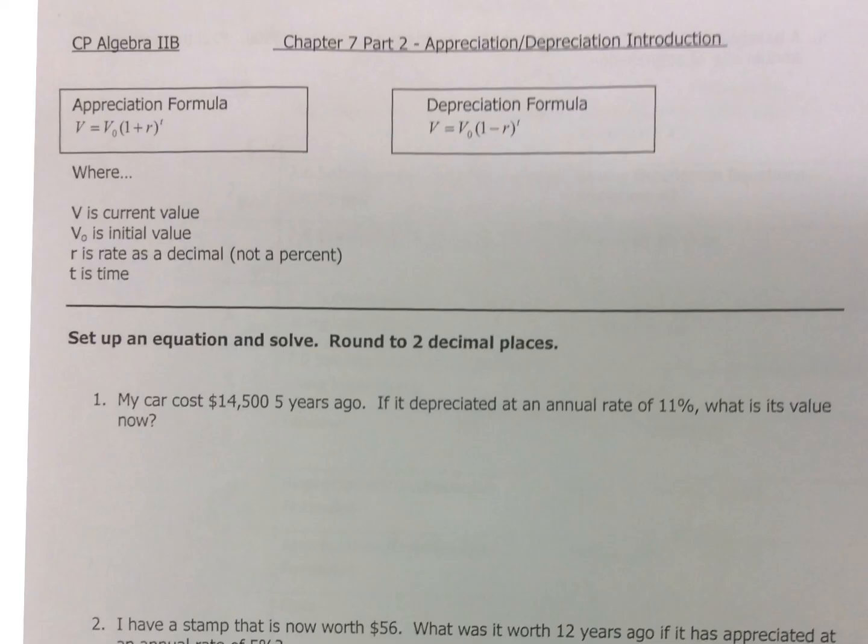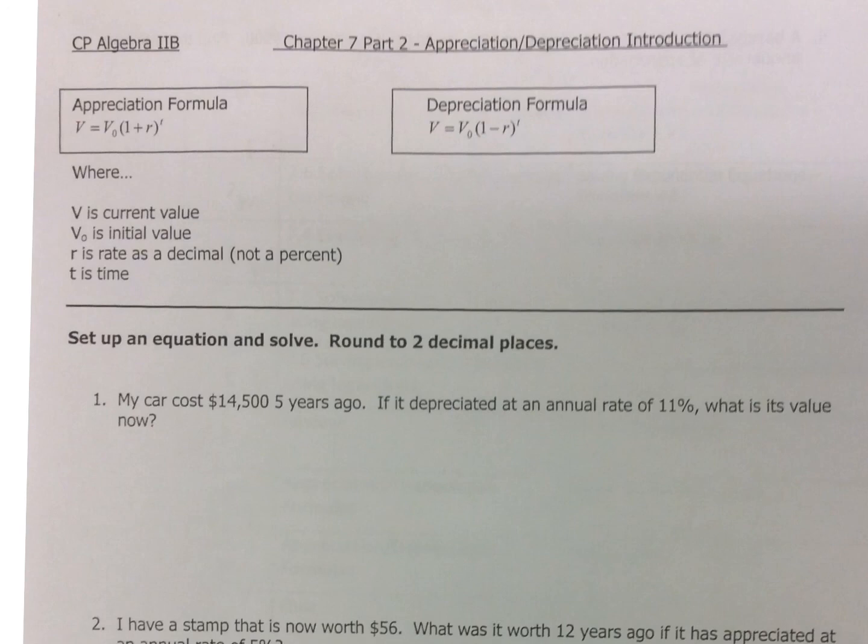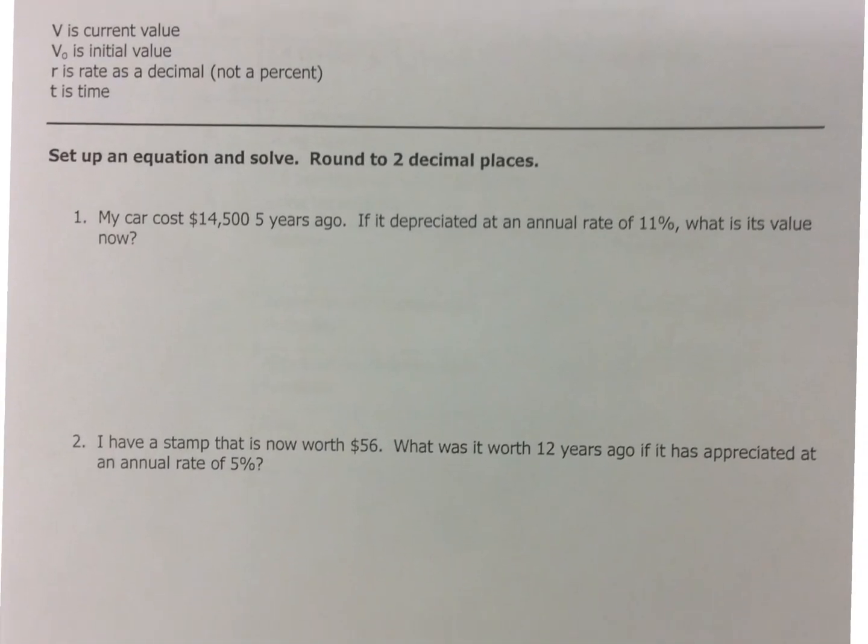Alright, so here we go. We're going to take a look at our first problem. Now, it is a word problem, so the first thing I'm going to do is read the problem and get an idea of what's going on. So again, the things we have to find: V, V_O, R, and T.